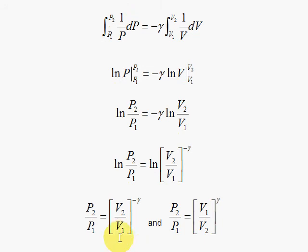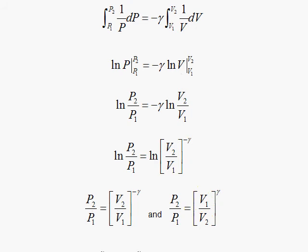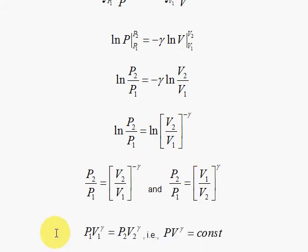We get P2 over P1 is the ratio V2 over V1 with the minus gamma. To make the gamma plus, we flip the two volumes. And we get our final result.